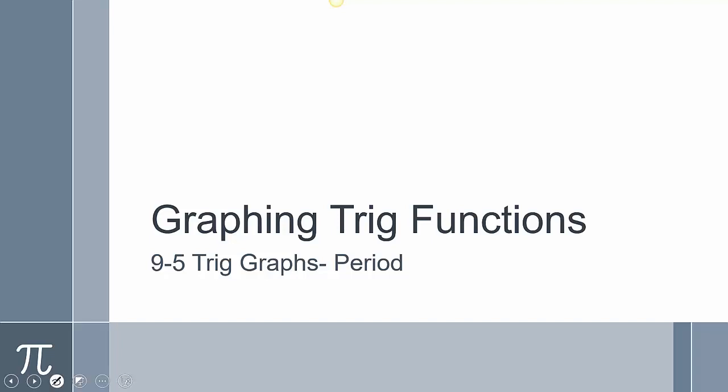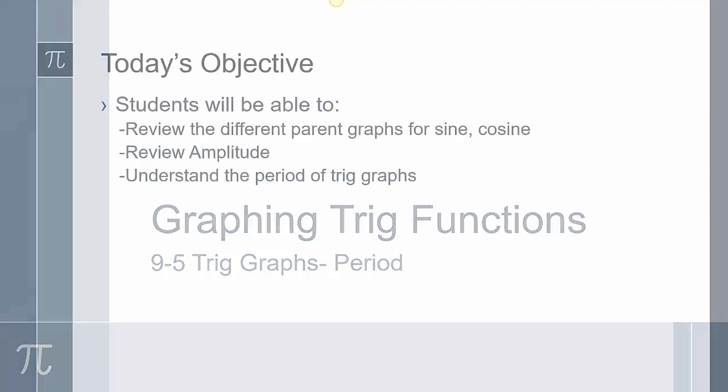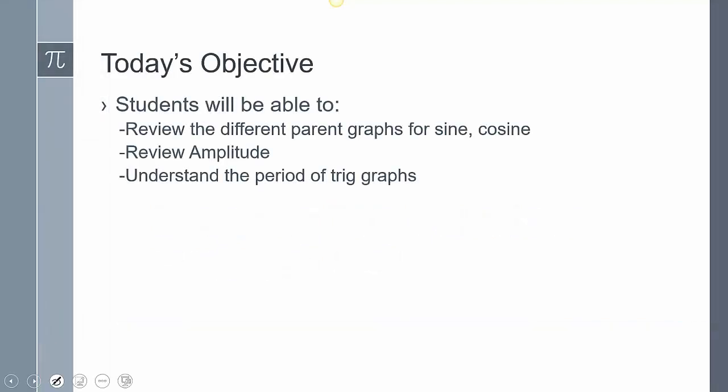Section 9-5: we're going to take a look at the period change in trigonometric graphs. We're going to review the parent graphs for sine and cosine — those are the ones we examined yesterday — we're going to review amplitude, and then we're going to understand the period of a trig graph.